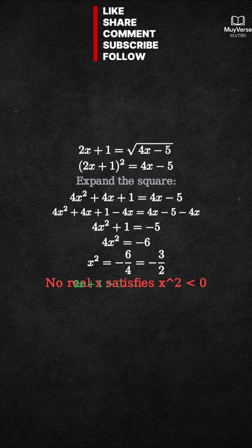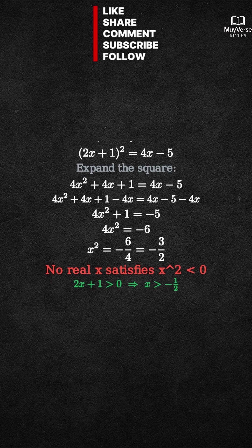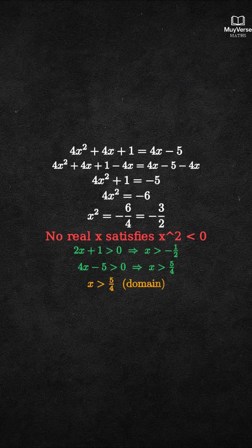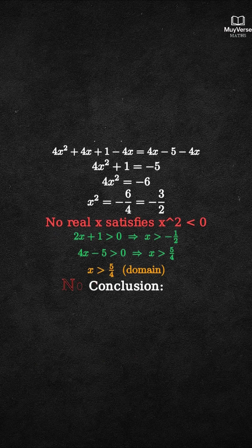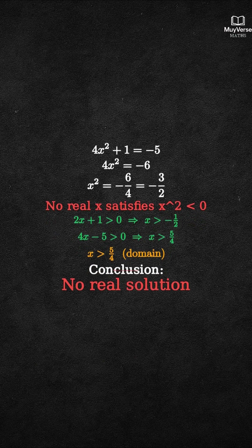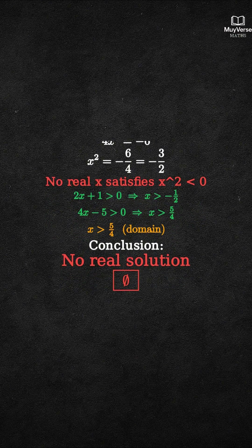we must have 2x plus 1 greater than 0, so x greater than negative one half, and 4x minus 5 greater than 0, so x greater than 5 fourths. Together, the domain requires x greater than 5 fourths, which conflicts with any non-real value. Therefore, there is no real solution. The solution set is the empty set.